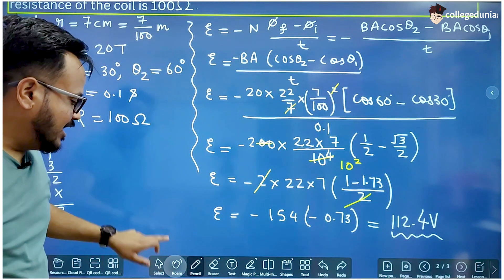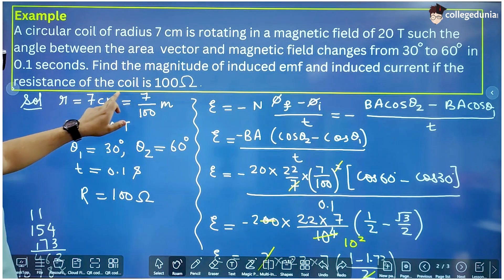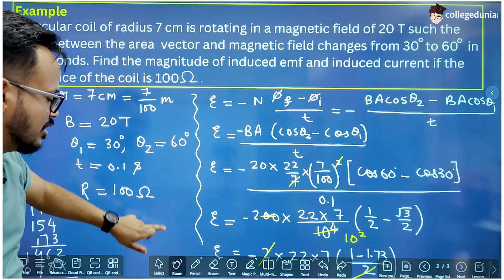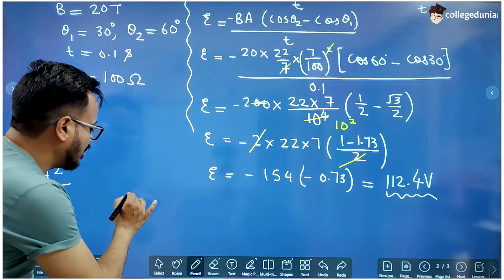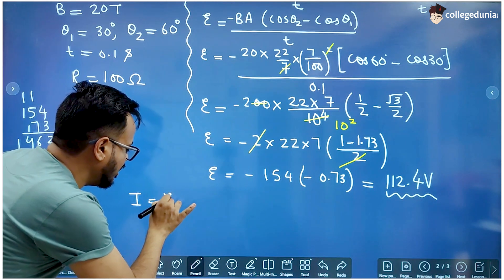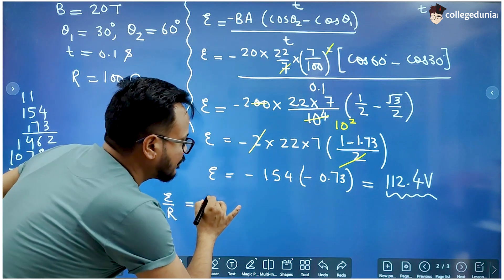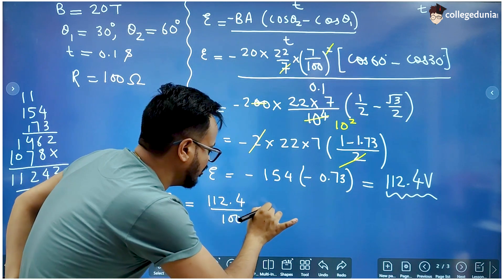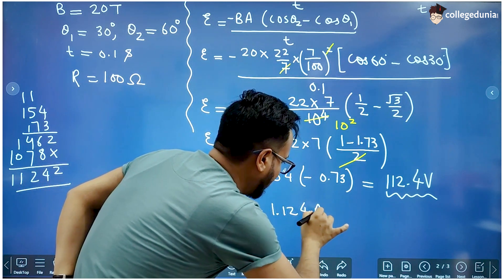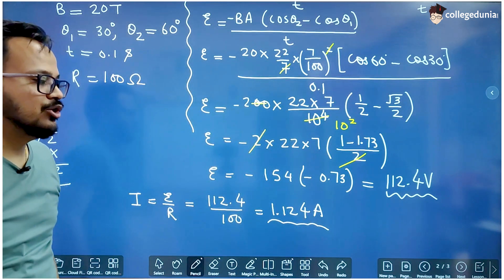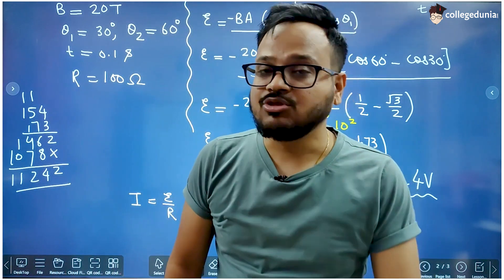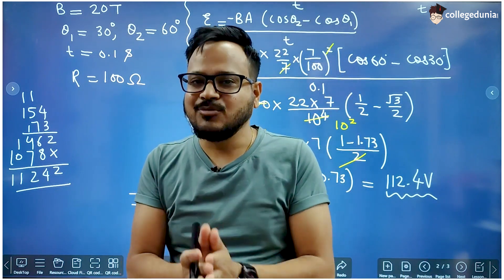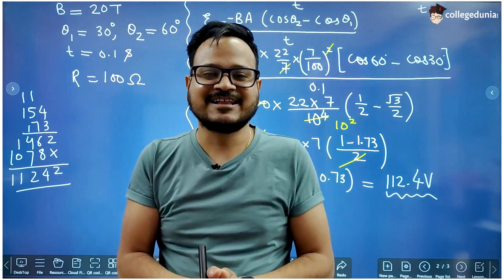This is the value of induced EMF. We also need to find the current — the resistance of the coil is 100 ohm. So induced current I = E/R = 112.4 / 100 = 1.124 ampere. So the induced current is 1.124 ampere. This was the whole concept of Faraday's laws — formulae, meaning, and numericals. I will meet you in the next lecture; till then, all the very best.